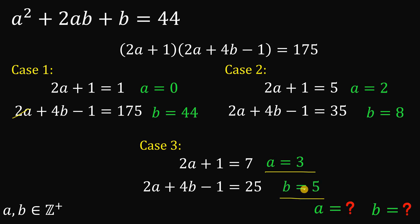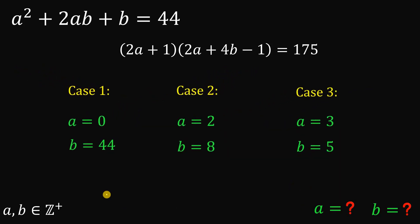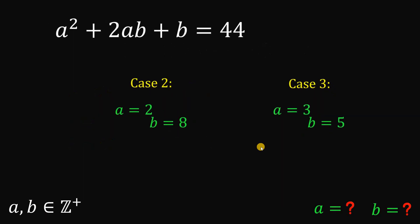So now we found three possible values of all values of a and b. But take note, a and b here are both positive integers. And 0 is not a positive integer. So case 1 is eliminated because a and b are both positive integers. So the only case left is case 2 and case number 3.